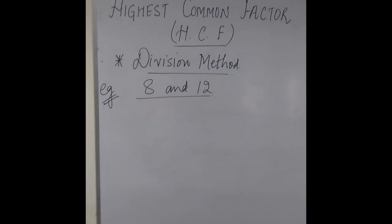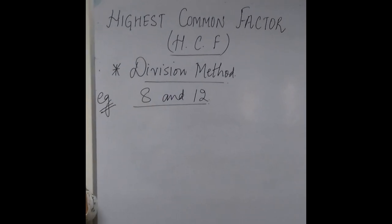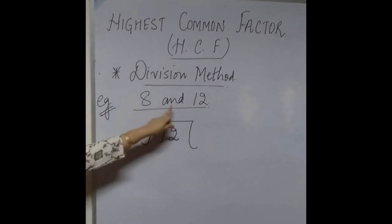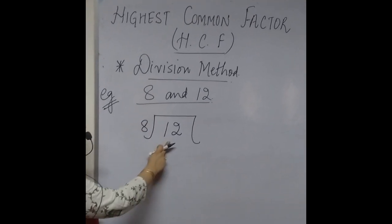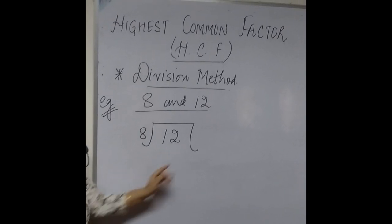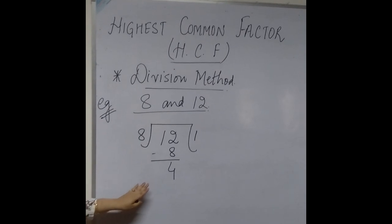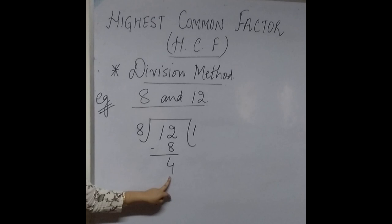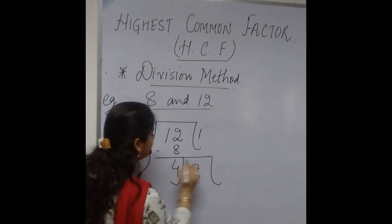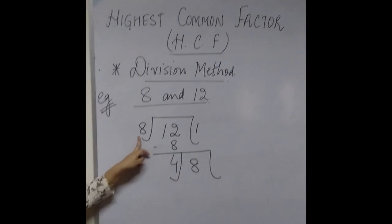The first example is: we have to find the HCF of 8 and 12. As the basis of this method, it is carried out using division of the two given numbers. We are going to take 12 inside the division box because it is the greater of the two numbers, and make 8 the divisor — 12 becomes the dividend and 8 becomes the divisor. Now in the table of 8, check where a number closest to but not exceeding 12 appears. 8 times 1 is 8, and if you subtract it the remainder is 4.